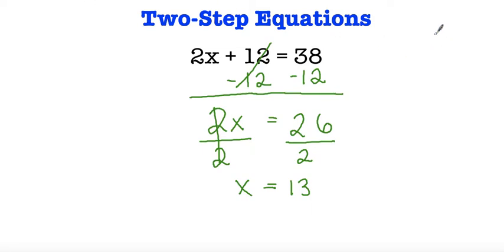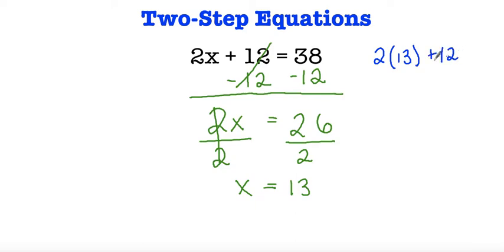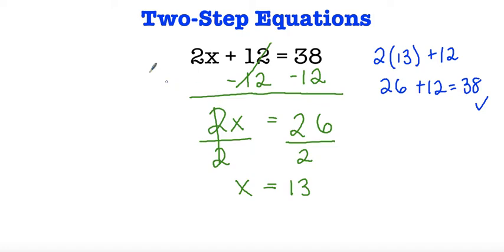And if I wanted to go back and check my work, all I'd have to do is substitute. So 2 times 13 plus 12: 2 times 13 is 26, plus 12 is equal to 38. So that's how I know I did my work correctly.